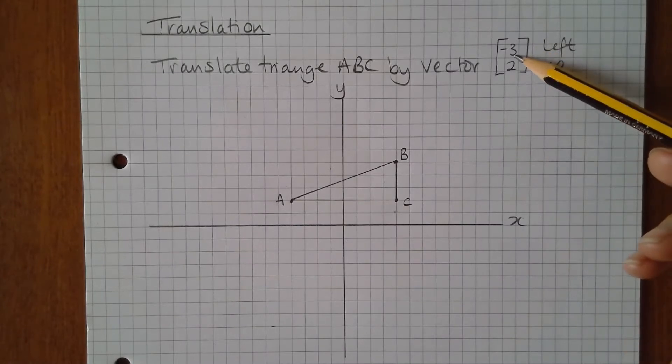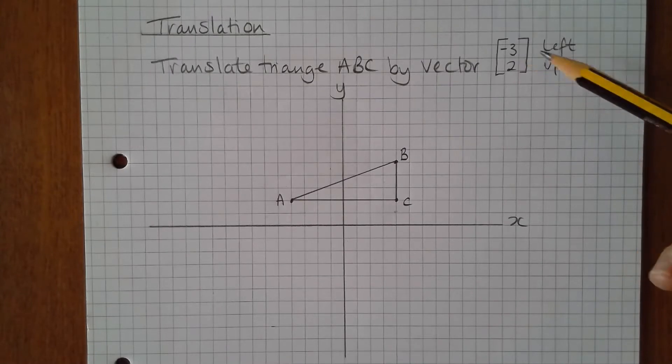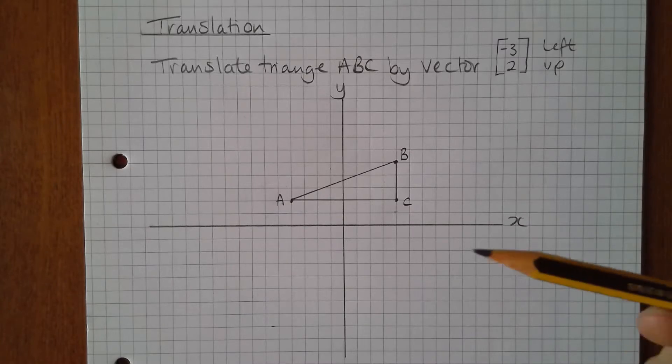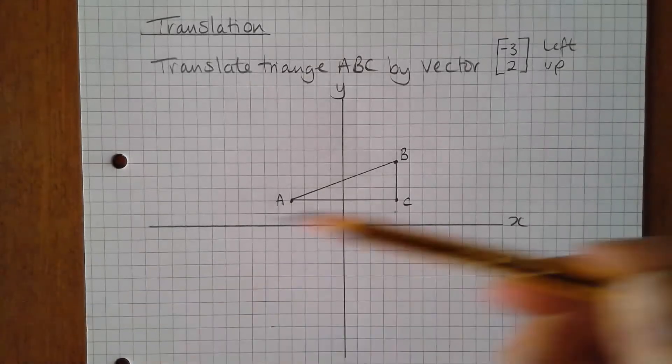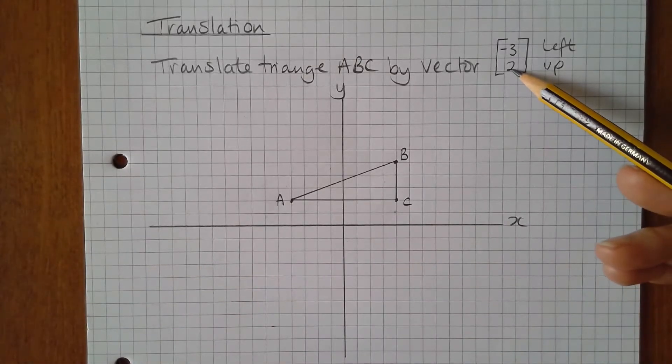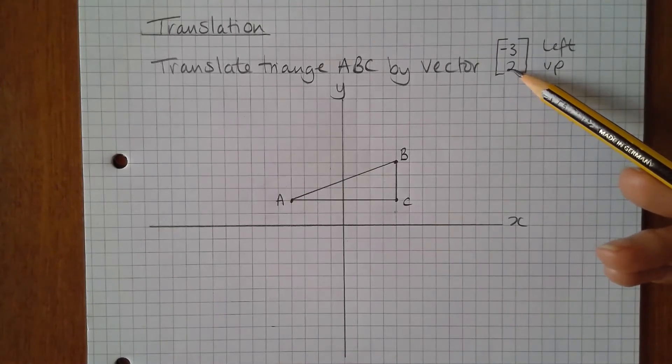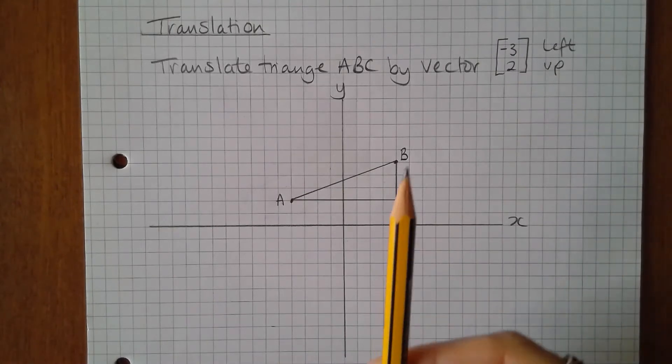So the first number in the vector is negative 3 and that's the horizontal translation, so negative means three units to the left. The second number is the vertical translation and that's positive so that means two units up.